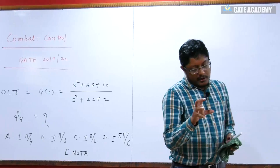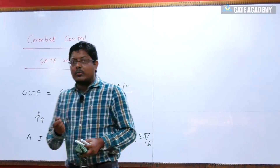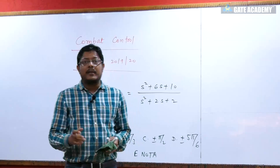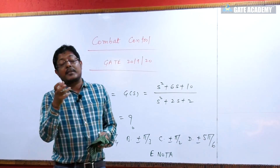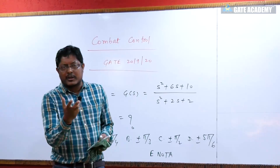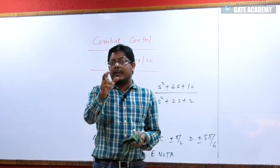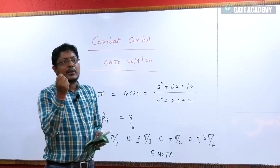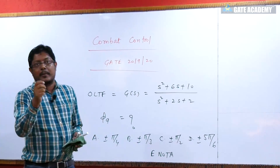Now when we talk about root locus, the system gain K is the variable from 0 to infinity. It varies the characteristic equation, finding the closed-loop system poles, which represent the root locus diagram. So the reasoning was that K equal to 1 is a static system and its root locus diagram exists.